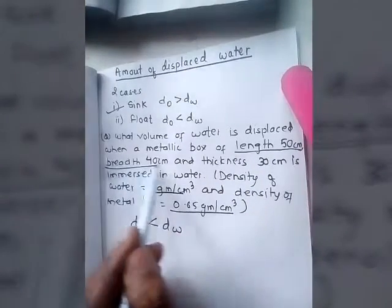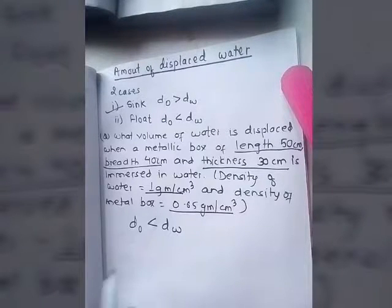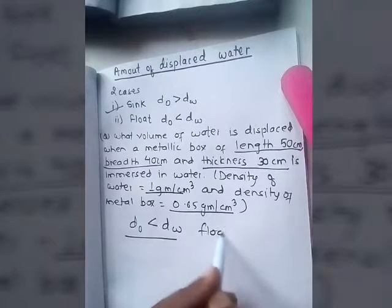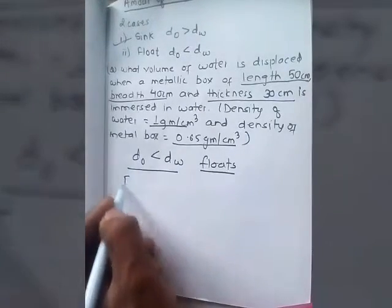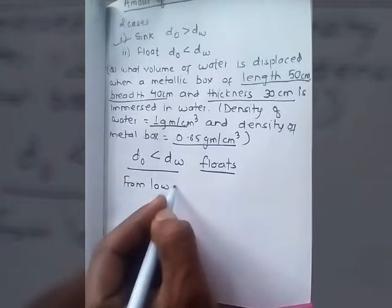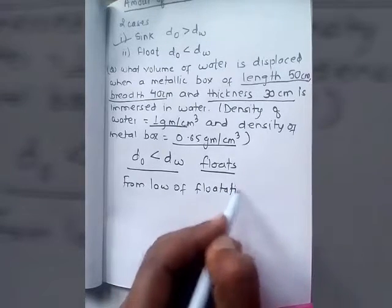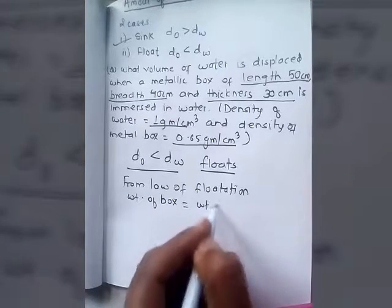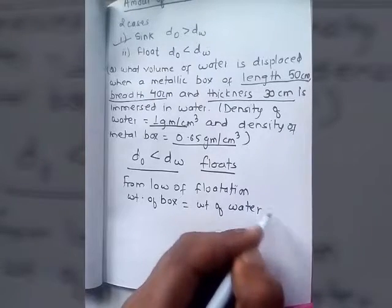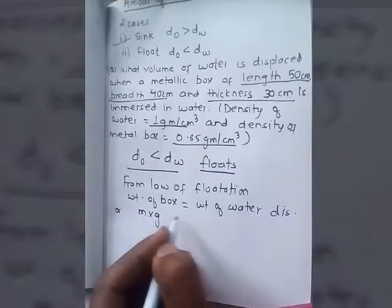So how do we find the volume of displaced water? This is the case where the object floats, and we definitely have to apply the law of flotation. From the law of flotation, the weight of the box equals the weight of the water displaced.